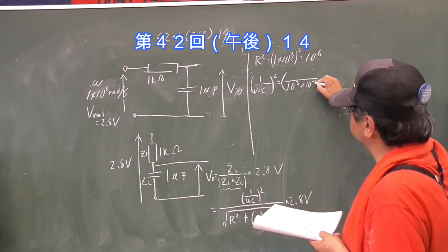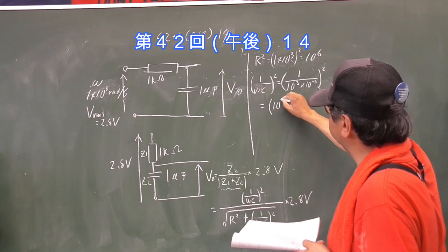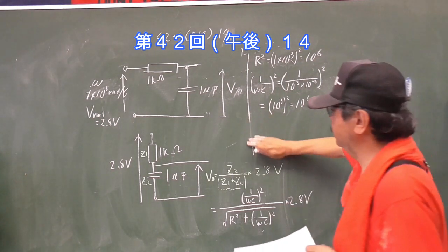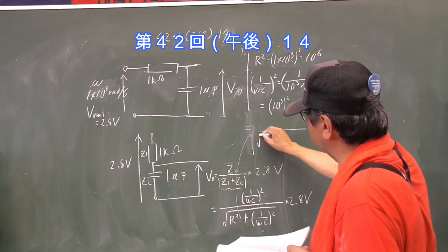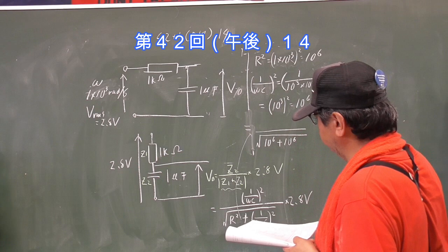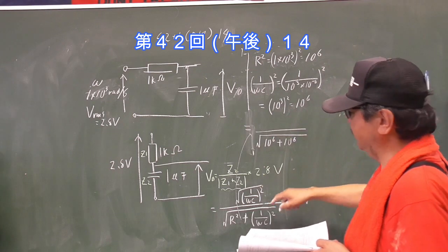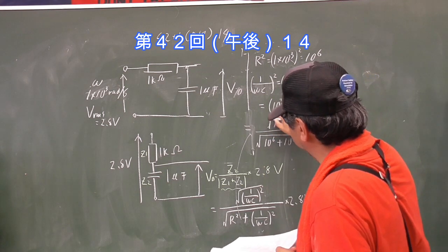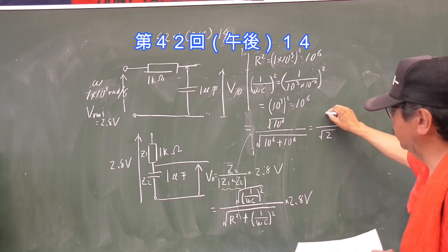ωは10³ですね、かけるマイクロは10の-6乗分の1の2乗、10の3乗イコールこれは10の3乗の2乗イコール10⁶、一緒じゃんというのが分かれば、特記が出てきましたね。VoutイコールルートのR²たすωC分の1の2乗分のωC分の1の2乗かける2.8Vになりますよ。ルートの10⁶たす10⁶分のここもルートで、大きさですから。これは10⁶のルートになるんですね。となったらこれは結局ルート2分の1、